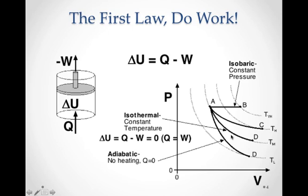A third process is the isothermal process, where temperature remains constant. If temperature is constant throughout the process, the heat added to the system is just enough to do the work, and the internal energy remains constant — it does not change. That's why the temperature doesn't change. The change in internal energy equals zero because the heat added exactly balances the work done lifting the piston. The system follows a path along the isotherm from point A to point D. That's an isothermal process.